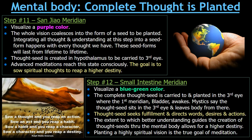Now in Step 12, which is the ultimate step in the mental body, we have the Small Intestine Meridian — visualize a blue-green color. The complete thought seed formed in Step 11 is carried to and planted in the third eye, where the first meridian of the whole mental body order, the Bladder Meridian, awakes. Mystics say that the thought seed created in Step 11 sits in the third eye and leaves the body from there to manifest itself in your life. The thought seeds seek fulfillment and direct words, desires, and actions. They can also subconsciously direct the words, desires, and actions of other people — they have power.